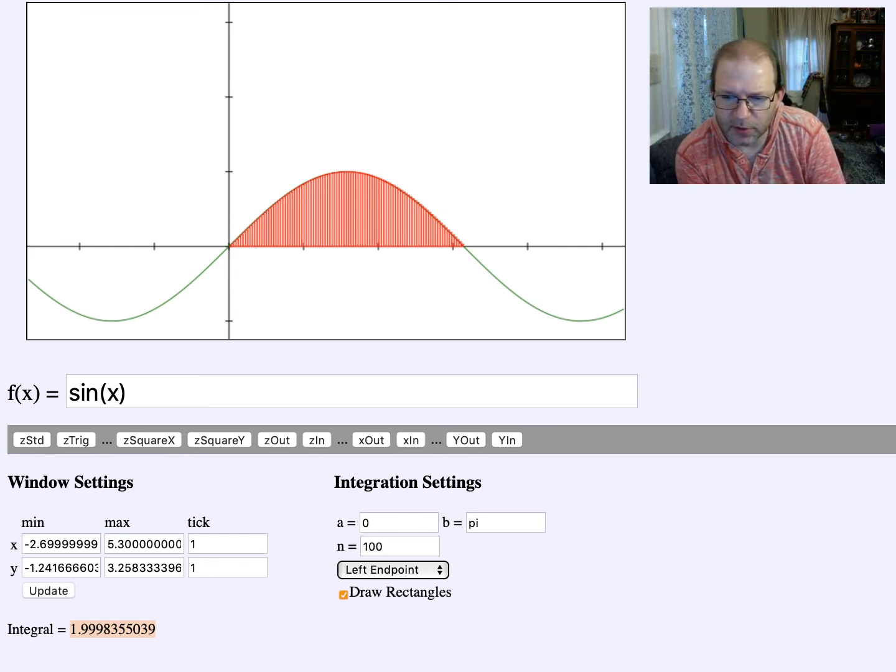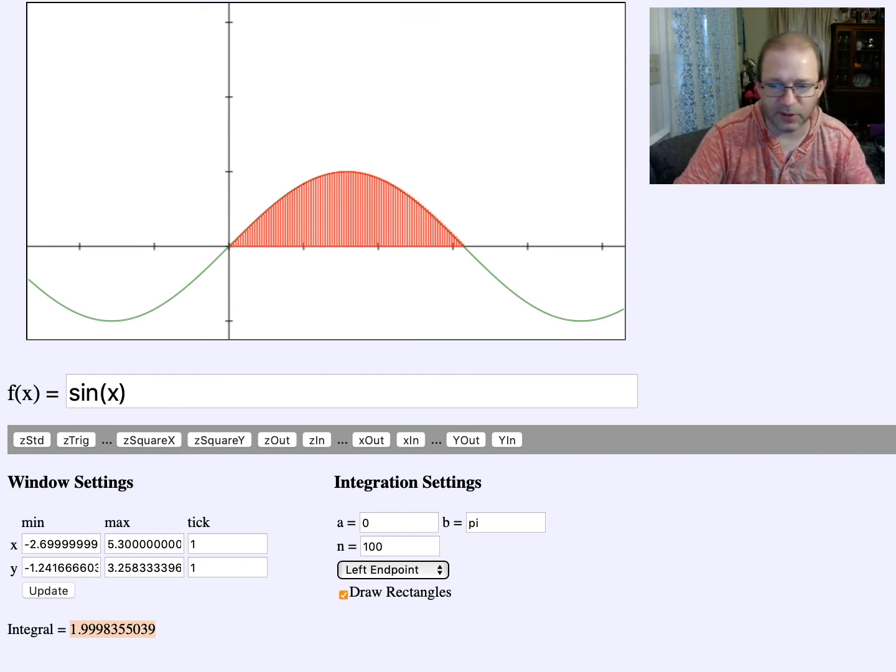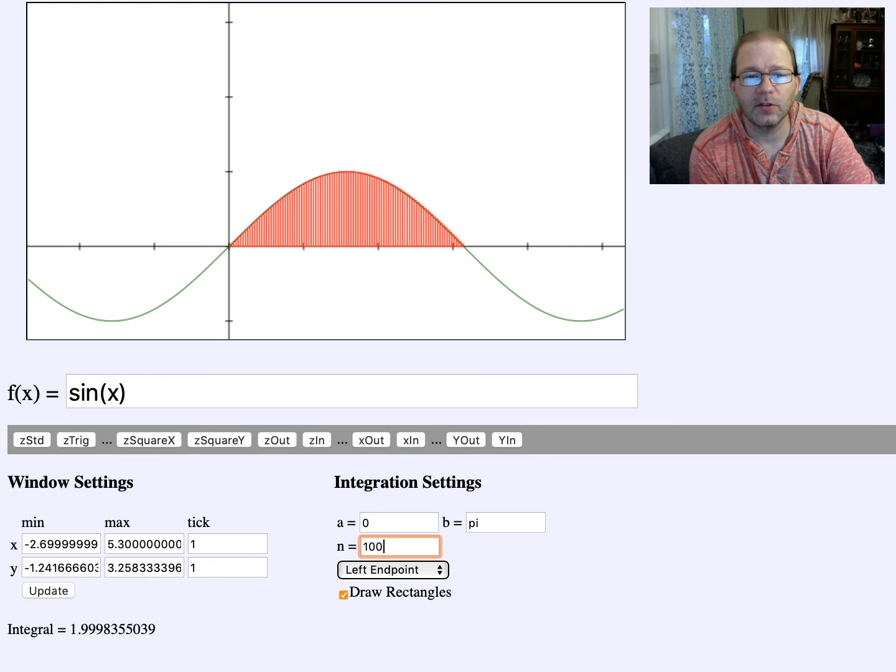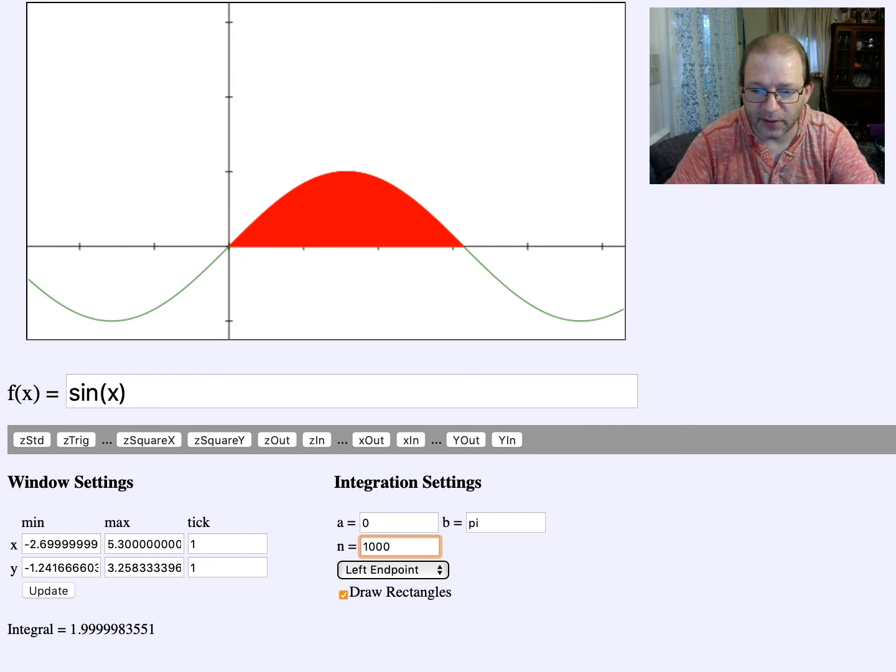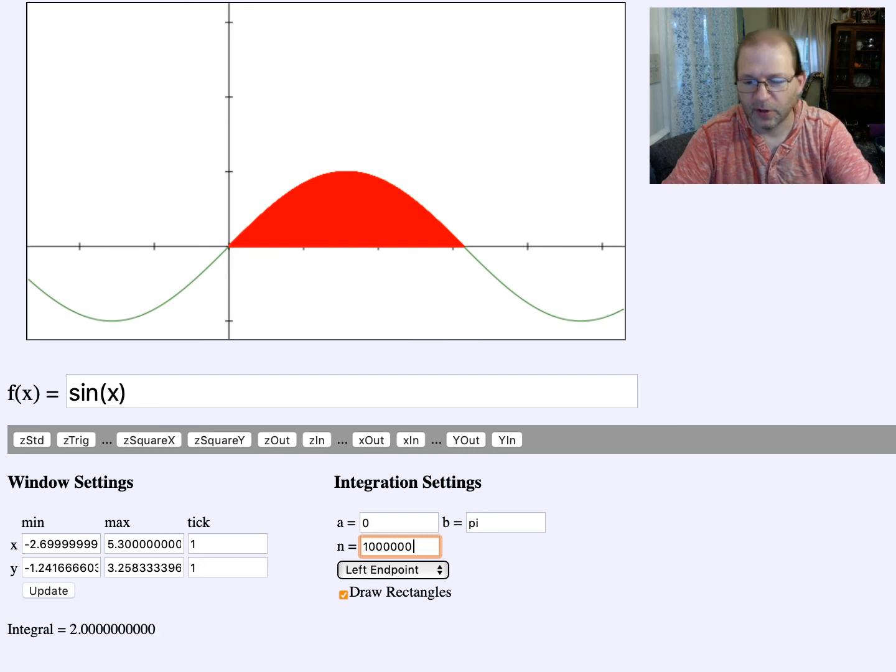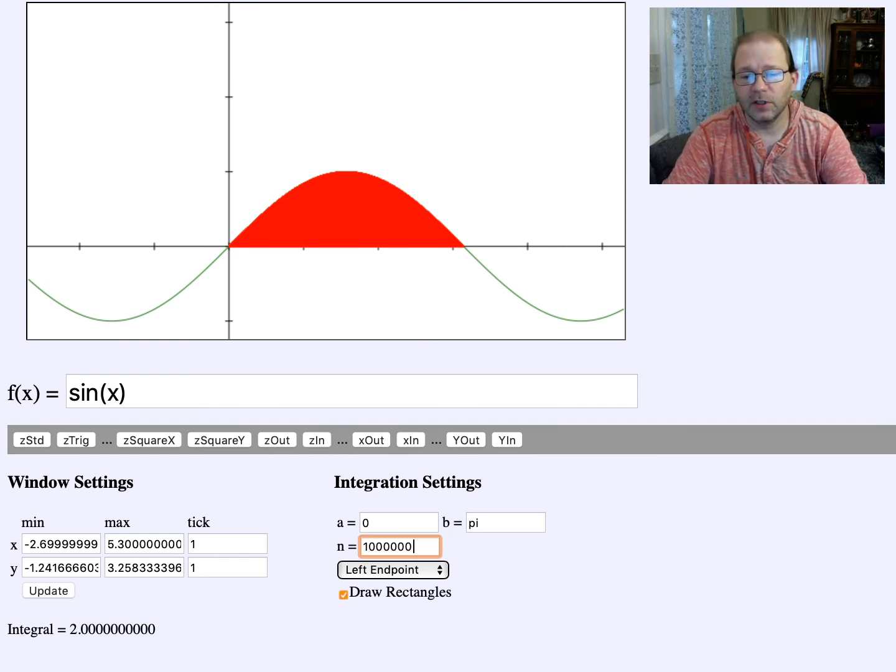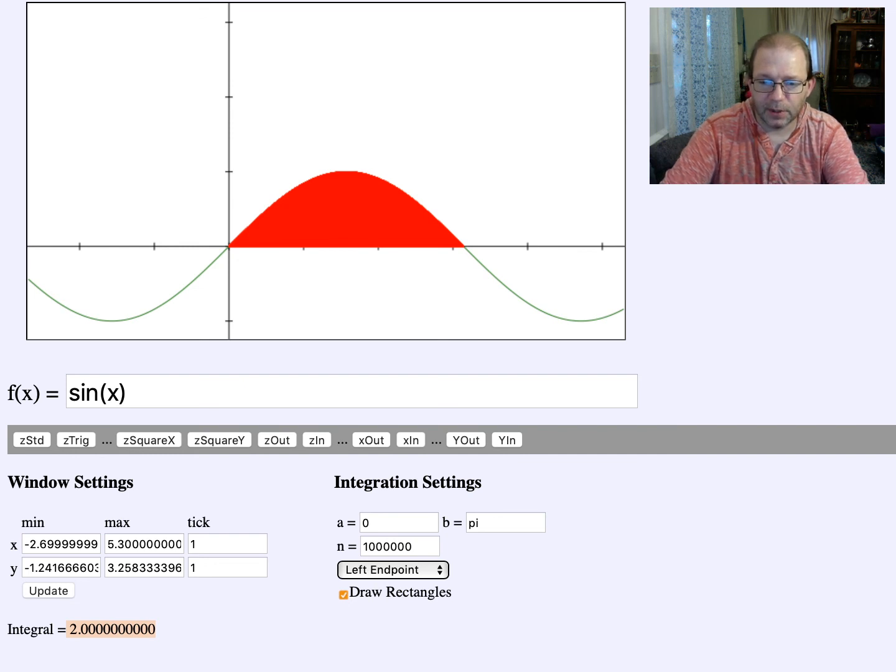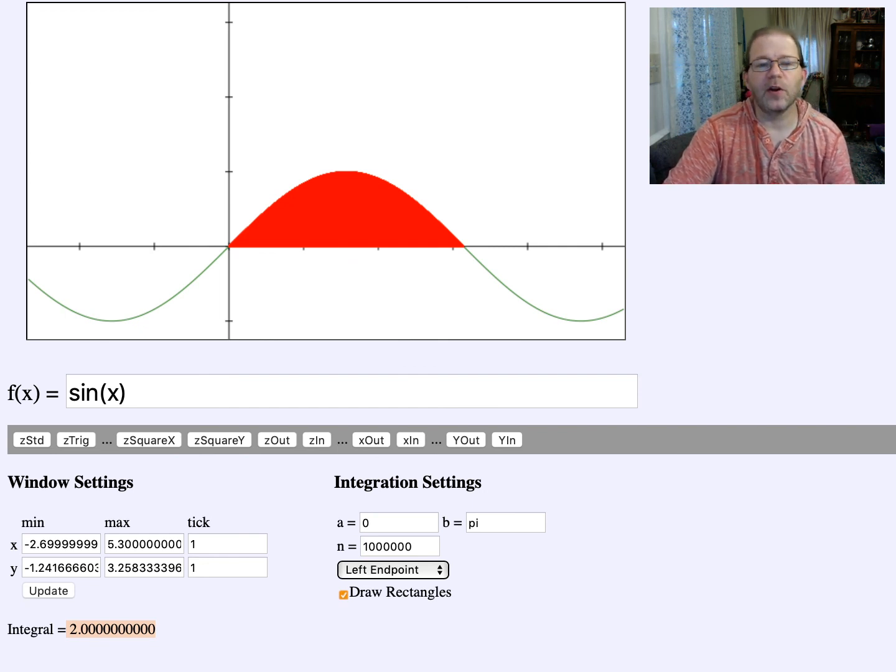So what do you think the actual answer there would be? Well, it looks like it's close to 2. But let's see if by using more rectangles, if it gets closer to 2. If I put in 1,000 rectangles, yeah, we get more nines there. Let's jump up to 100,000 rectangles and see if we get more nines. Oh yeah. And finally, a million rectangles. If I put in a million rectangles, it gives me 2. It's still giving an approximation. It's just the approximation is, it turns out the actual answer is 2. And this is giving an approximation that's close enough that through round off error, it gives us exactly 2.